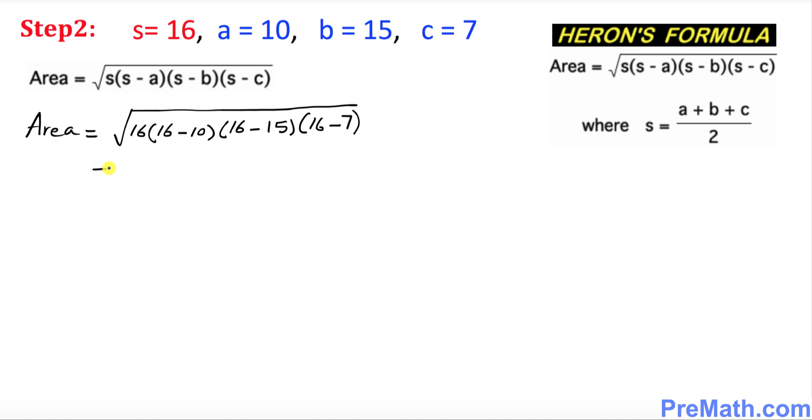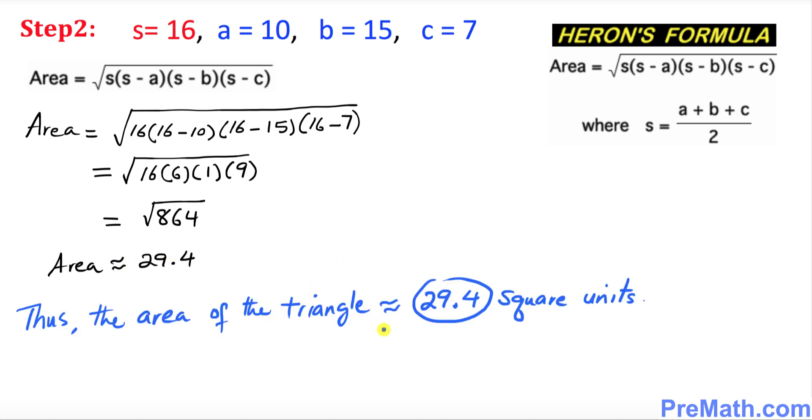Let's go ahead and simplify it. That's going to give you 16 times 6 times 1 times 9. If we multiply these ones, that's going to give us 864. And if you find the value using a calculator, that's going to be approximately equal to 29.4. Thus, the area of the triangle is approximately equal to 29.4 square units.